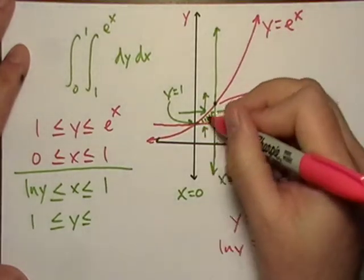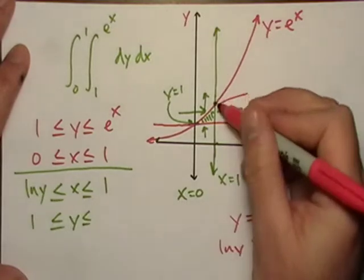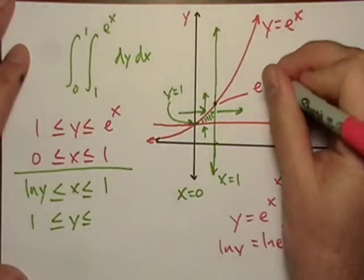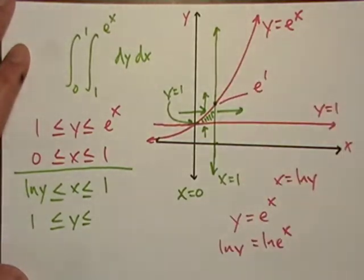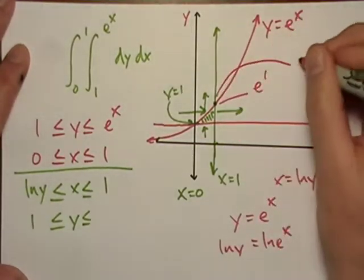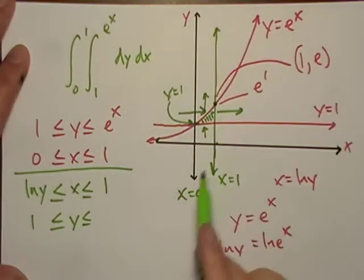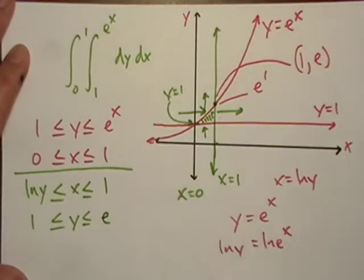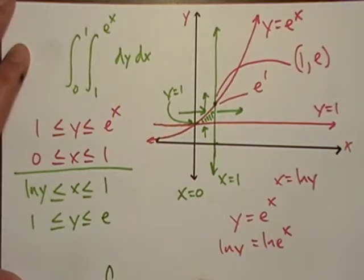Okay, and this is the function y equals e to the x, but notice it intersects the line x equals 1. So it's really e to the 1. So this actual point right here, let me get even sloppier here, is going to be 1e. So the maximum value of the region is e. So now that we know that, let's go ahead, we'll rewrite our integral.